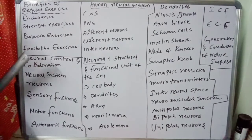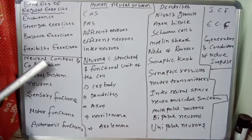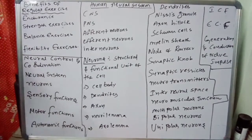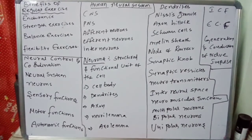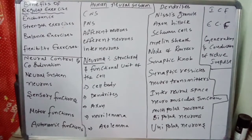The next chapter is neural control and coordination. It is a very important chapter. We are discussing the nervous system because the overall body is under the control of the nervous system.